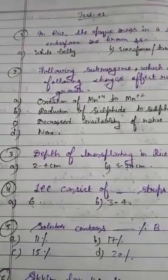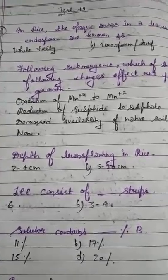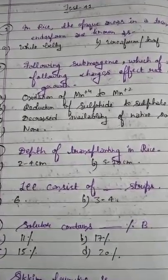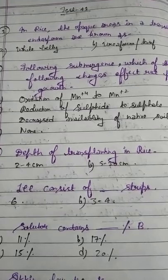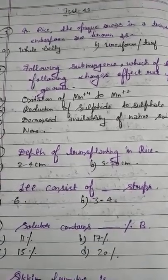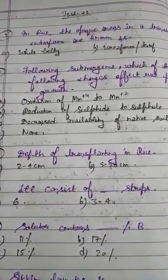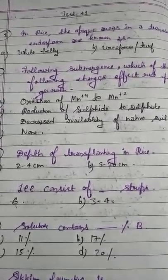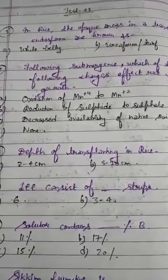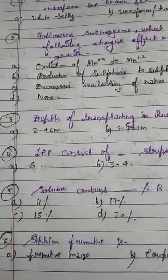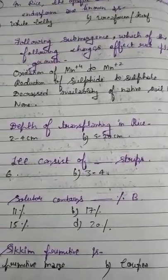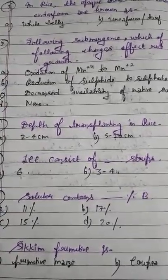Question 1: In rice, the opaque areas in a translucent endosperm are known as what? Option A: white belly. Option B: ureoform or turf. Note that ureoform is a major form of nitrogenous fertilizer applied to turf in the USA, particularly in lawns. So the correct answer is white belly. The opaque areas in translucent endosperm in rice are known as white belly. Please remember it.